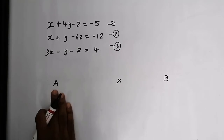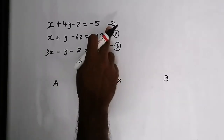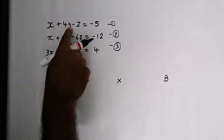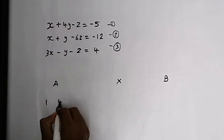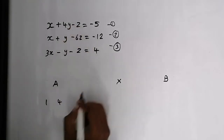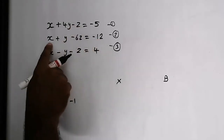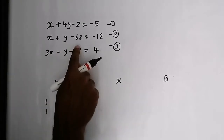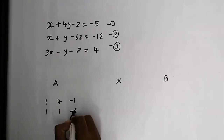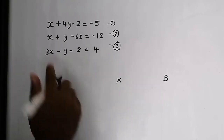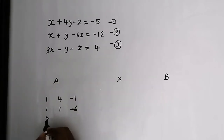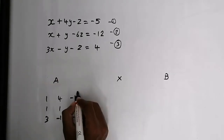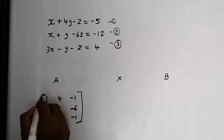The first matrix is the matrix of coefficients. In the first equation, the coefficient of x is 1, the coefficient of y is 4, and the coefficient of z is minus 1. In the second equation, the coefficient of x is 1, y is 1, and z is minus 6. In the third equation, the coefficient of x is 3, y is minus 1, and z is minus 1. So we have the matrix of coefficients.